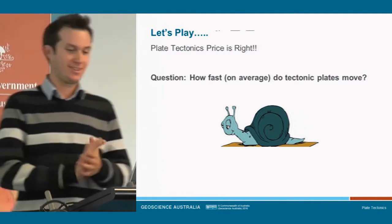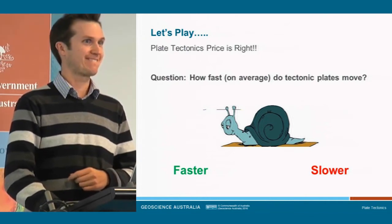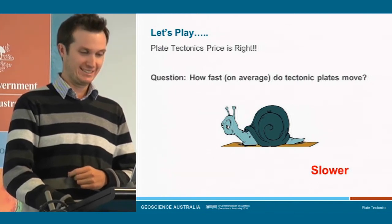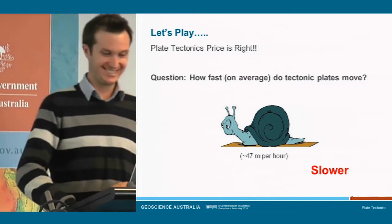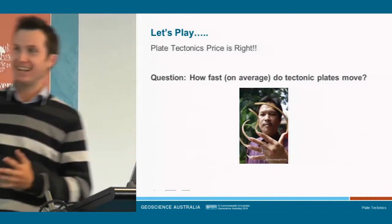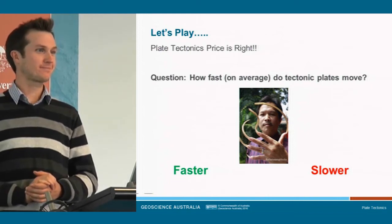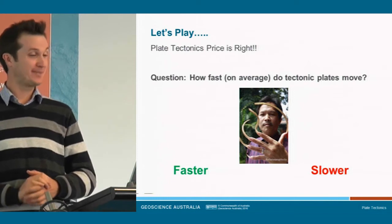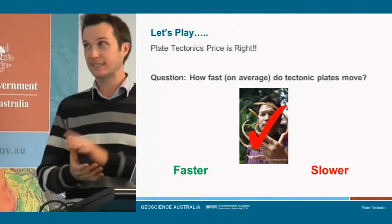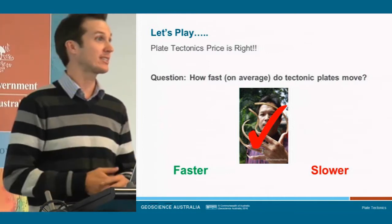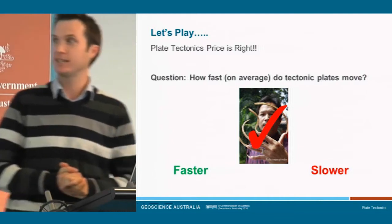How about a snail? Do you think tectonic plates move faster or slower than snail pace? Red is the overwhelming majority — and snails actually move, on average, around 47 meters per hour. That's pretty quick! How about how fast your fingernails grow — faster or slower? That's pretty much 50-50. And it's actually around the speed that plates move. Some are a bit faster, some a bit slower, but in general, how fast your fingernails grow — about four centimeters a year — is roughly how fast most tectonic plates move, varying between about two and ten centimeters per year.